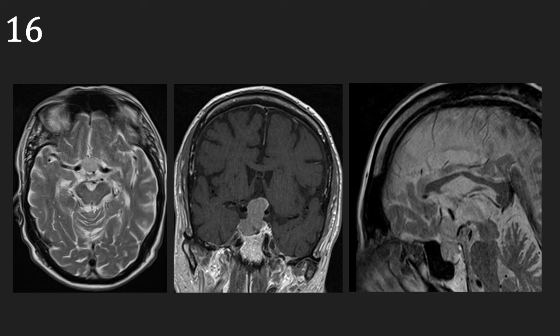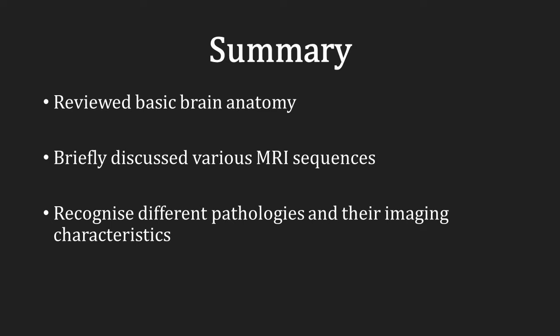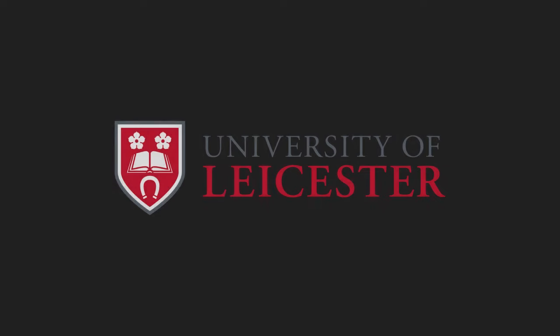Our final case is of an 84-year-old female patient who presented with bitemporal hemianopia, confirmed on clinical examination. Here, we can appreciate a large mass lesion in the pituitary fossa, extending upwards to compress the optic chiasm. This leads us to the diagnosis of a pituitary macroadenoma. In summary, we have reviewed basic brain anatomy, briefly discussed the various MRI sequences used to examine the brain, and applied this knowledge to recognise different pathologies and their imaging characteristics. Thank you.